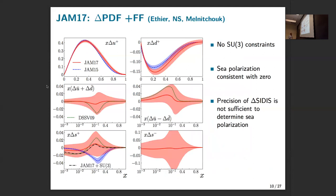In 2017 we decided to do the combined analysis: polarized PDFs, fragmentation functions, and semi-inclusive DIS together. What we found is that the uncertainty on the strange distribution is very large in this analysis. Since I'm now including semi-inclusive DIS with kaons, I can remove the SU(3) constraints. If I do that, the uncertainty on the strange distribution becomes very large — but in principle I'm entitled to remove the SU(3) constraint because I have the SIDIS data, even though the uncertainties and data are too large to constrain it precisely.